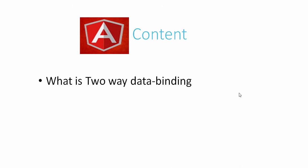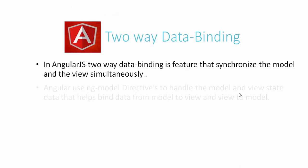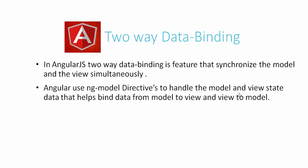What is two-way data binding? In AngularJS, two-way data binding is a feature that synchronizes the model and view simultaneously. The AngularJS ng-model directive is used to handle the model and view state data that helps bind the data from models to view and the view to models. What we discussed earlier in the first part is that AngularJS has a great feature which is called two-way data binding.